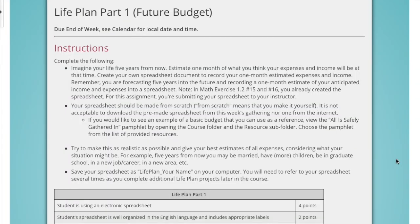Hello, Pathway students. This is Brother Meller and let's talk about the life plan part one. This assignment is the future budget. You're going to imagine what your life will be like five years from now. Think about what your expenses will be and what your income will be at that time. Then we're going to make a spreadsheet to document and record your one month expenses and income. Remember, five years from now — if you're single now, maybe in five years you'll be married, maybe you'll have children or more children, and maybe your young children will be older than they are now.